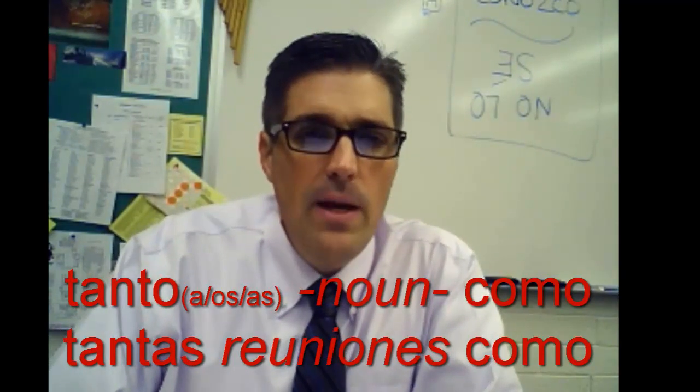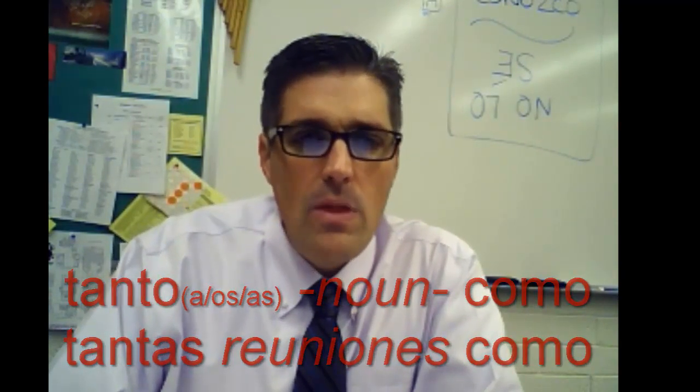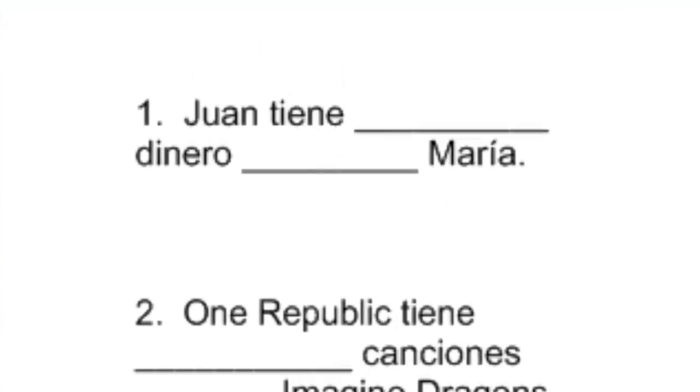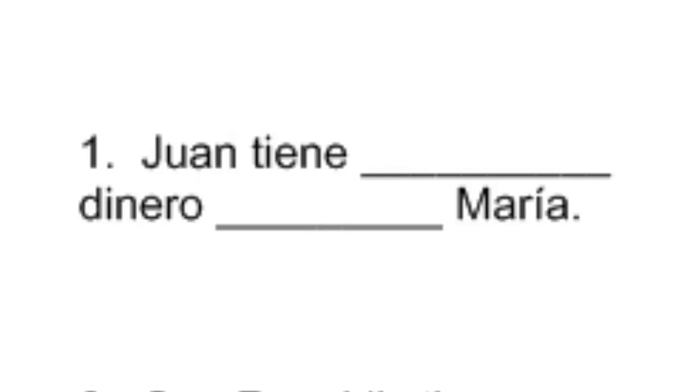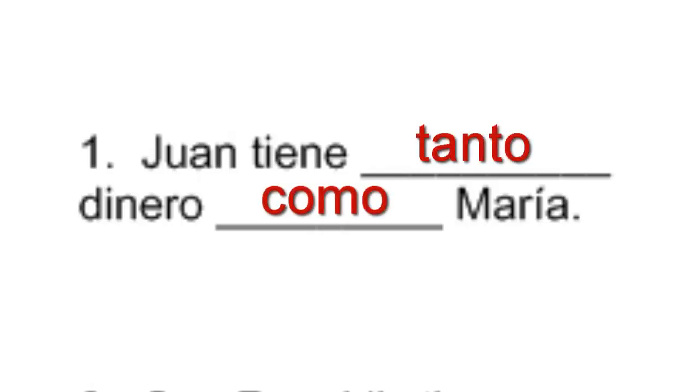First one: Juan tiene _____ dinero _____ María. Since money is a noun, we're going to use 'as much' — tanto. Juan tiene tanto dinero como María.